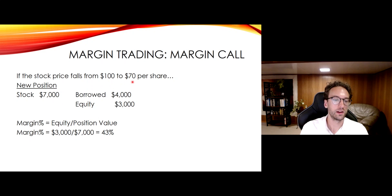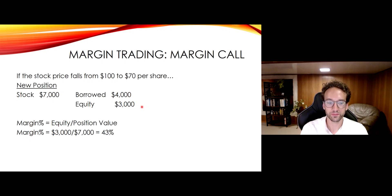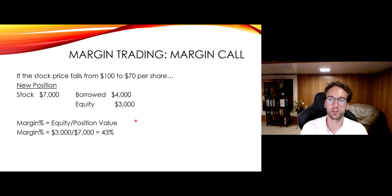In this case, if it's $70 a share, you have a $7,000 asset and you have a $4,000 liability. So your equity has fallen from $6,000 to $3,000. Now what's your margin percentage? Again, it's equity divided by position value. Your equity has fallen to $3,000. So it's $3,000 divided by $7,000, and your margin percentage is 43%.